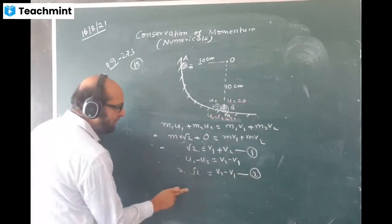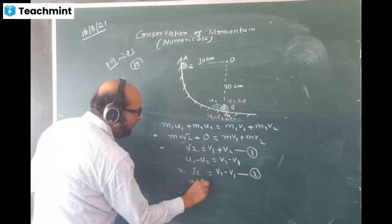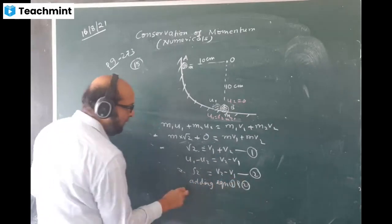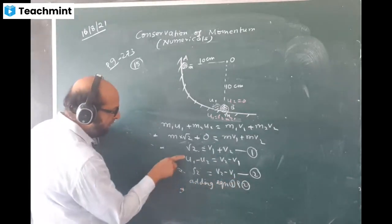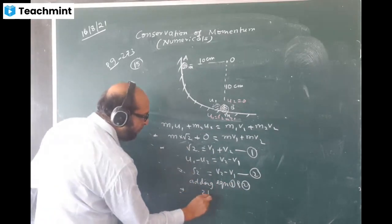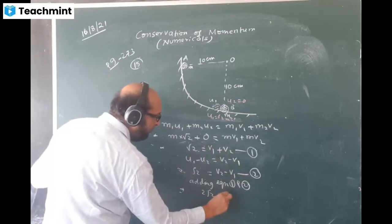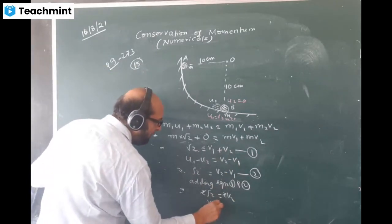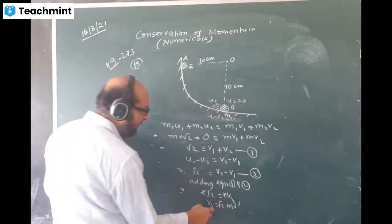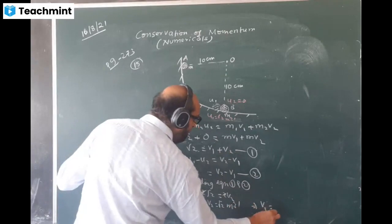We'll solve the two equations simultaneously. Adding equation one and two, when you add what answer do we get? This and this will be added up, this will become 2√2, and this side v1, v1 will go, you get 2v2. 2 cancels, the value of v2 is coming √2 meters per second. And I'll put the value v2 back here and find v1. Therefore v1 value will become 0.